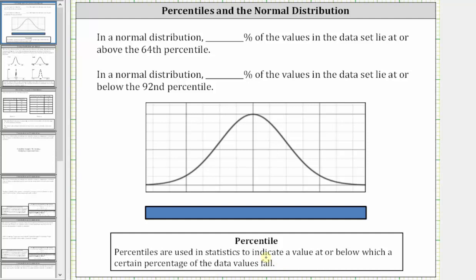So if we want to model the 64th percentile using this bar, where the bar represents all of the data, the 64th percentile might be, let's say here, where 64% of the data values are at or below this data value.